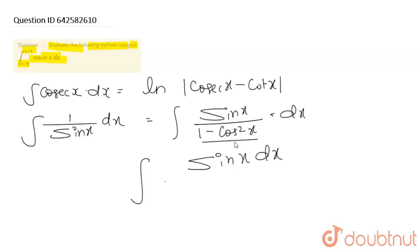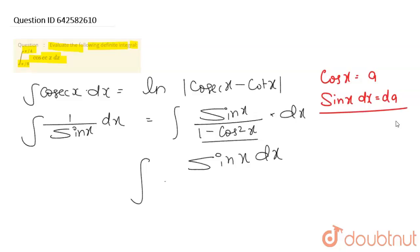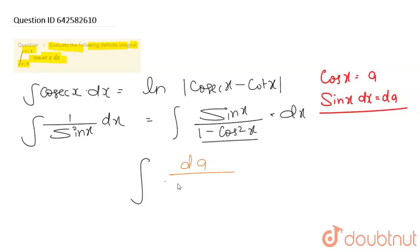यहाँ फिर एक और तरीका है — cos x का differentiation होता है sin x, यह हम सब को पता है। अगर मैं cos x को t मान लूँ, तो इसका differentiation होगा sin x, और dx equal to dt। तो sin x dx की जगह dt आ जाएगा। तो यहाँ मैं लिख दूँगा dt upon 1 minus t²।